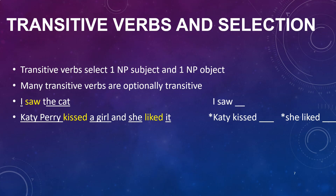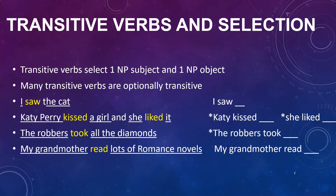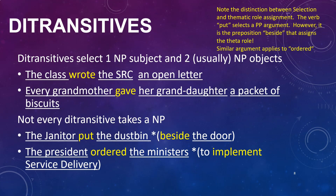'Katie Perry kissed' feels like we need something extra. Similarly, 'she liked' seems as if there's something missing. That sense of missingness — the feeling that the sentence doesn't fit well — is called ungrammaticality, and as linguists we have to cultivate that intuition. 'The robbers took all the diamonds' — delete the object and it becomes 'the robbers took,' which is ungrammatical. 'My grandmother read lots of romance novels' — it is still possible to say 'my grandmother read.'